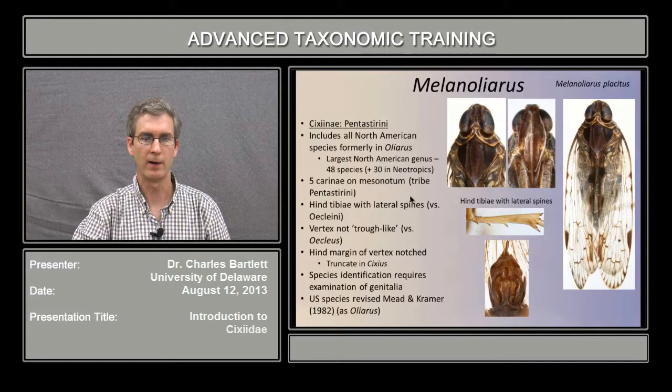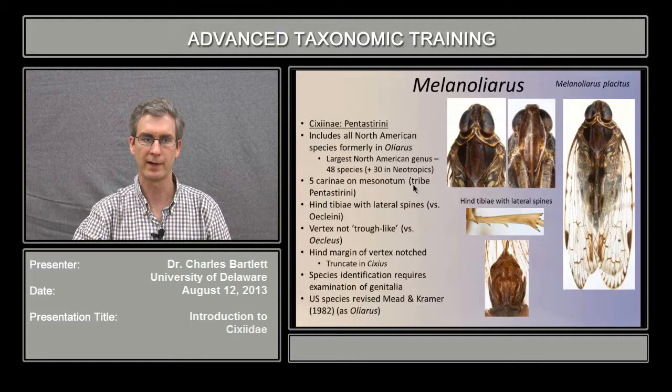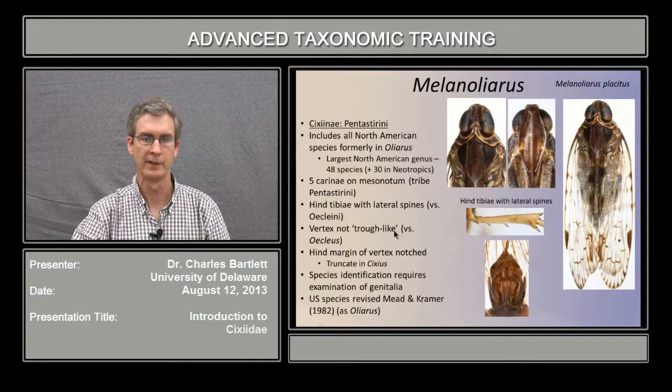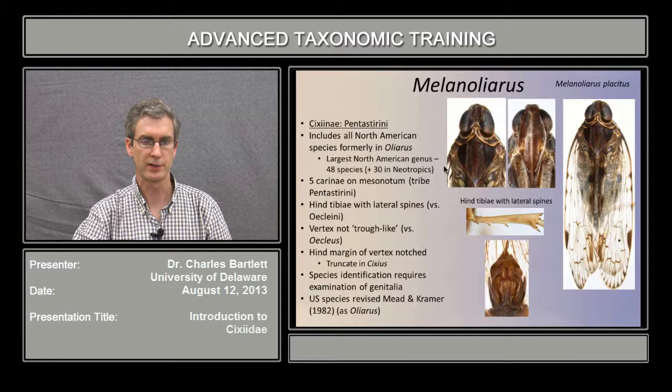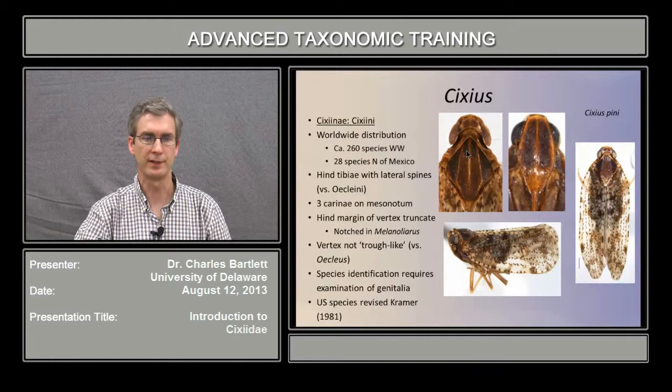All Old World species that used to be in the genus Olearis are now in the genus Melanoliaris. It is our largest New World genus, including 48 North American species plus 30 in the tropics. The genus Melanoliaris can be recognized by the presence of 5 charine on the mesonotum, a feature of the tri-pentasterinae. The hind tibia bear lateral spines, and the vertex is wide as opposed to trough-like in the Eucleus. Recognition of species requires examination of the male genitalia.